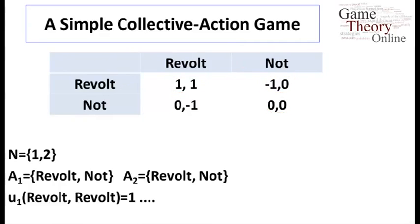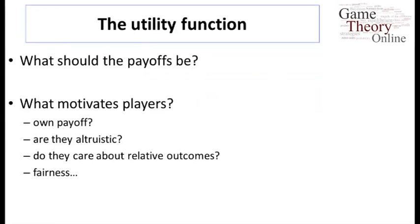How do we model this? As you might expect, we have again two players, 1 and 2. It happens to be symmetric. They can revolt or not. If they both revolt, the payoff is 1. Hopefully this is pretty straightforward.